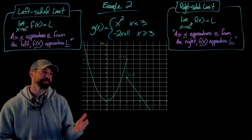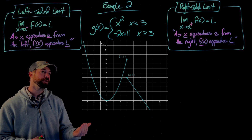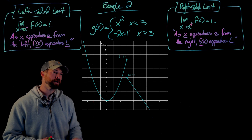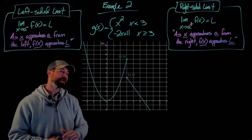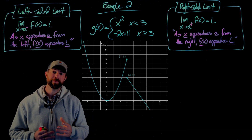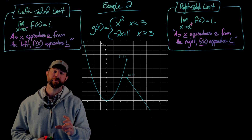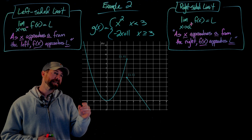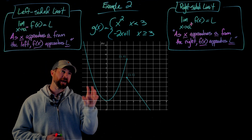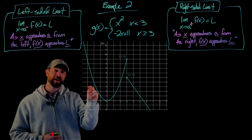G of x is a piecewise function that acts like x squared for x values strictly less than 3, and like the linear function negative 2x plus 11 for x values 3 and greater. Looking at the graph, x equals 3 is the defining point. On the left, we have an upward-facing parabola; on the right, a linear function with negative slope. The open circle on the parabola indicates the function does not reach the value of 9, while the linear piece starts at an output of 5.